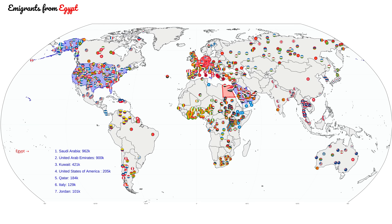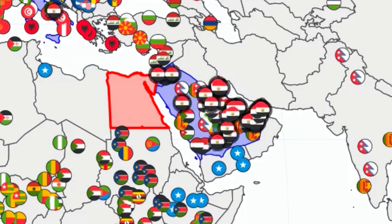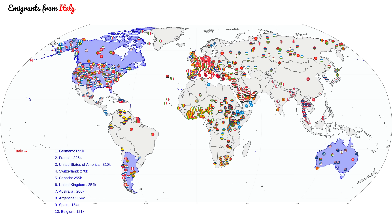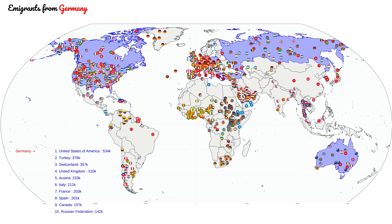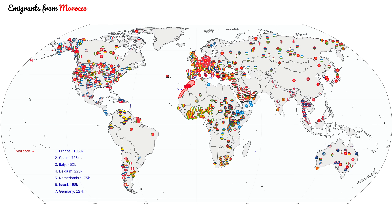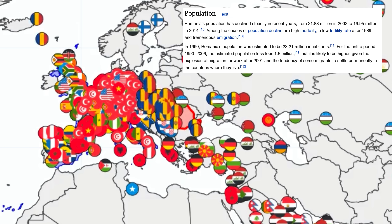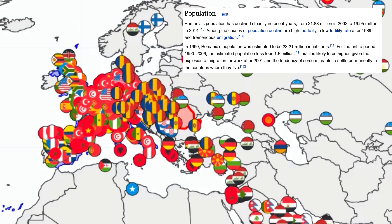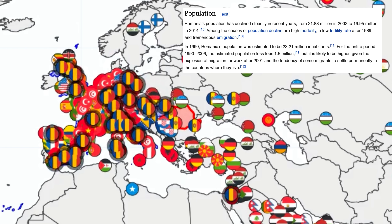We can now also see a new hotspot emerging: the Arabian Peninsula. These countries attract a lot of migrant workers and there is more to come later on in the video. I also want to come to Romania — it really stood out to me. For a medium-sized country it is losing a lot of people, to the point the population is actually shrinking.